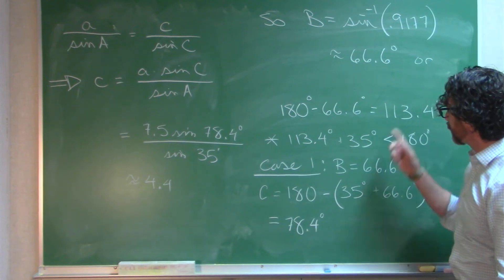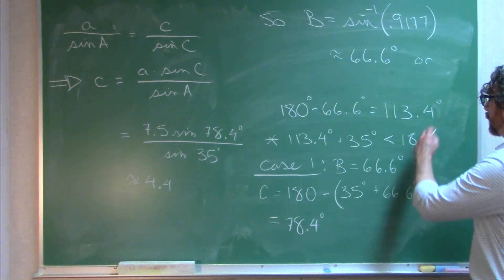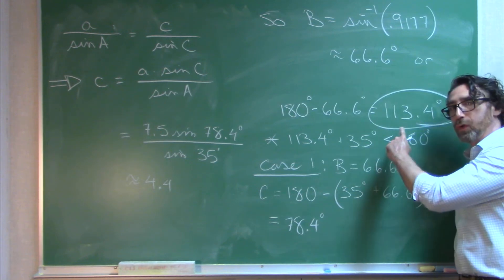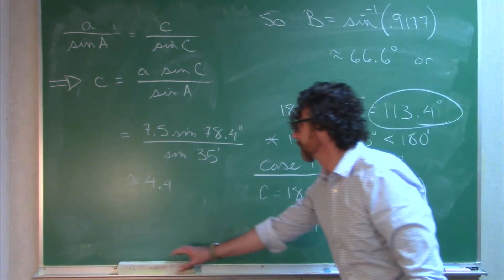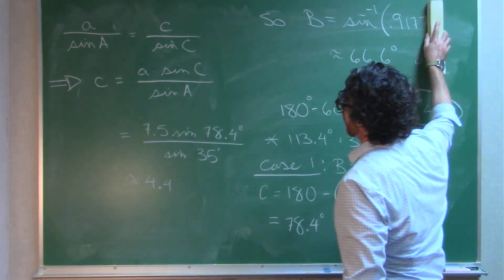Okay, so this is one solution. The remaining parts, B equals 66.6 degrees. That would make angle C 78.4, and side C equal to 4.4. Now we do have another possibility. Case 2 is that angle B was 113.4 degrees.